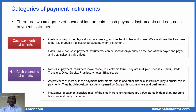Payment instruments can be divided into two categories: cash payment instruments and non-cash payment instruments. Cash is money in physical form of currency such as bank notes and coins. We are all used to it, but it is probably the least understood payment instrument. Cash, unlike non-cash payment instruments, can be used anonymously by both payer and payee, and that makes it truly unique. I'm planning to write a few articles on cash in the future, so keep coming to the channel.